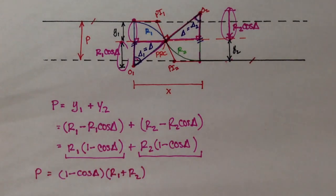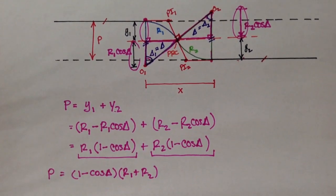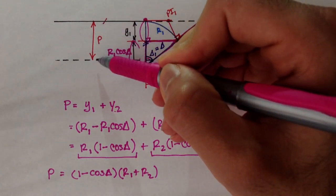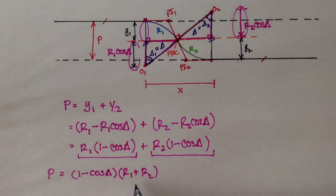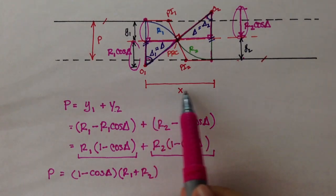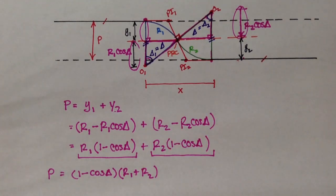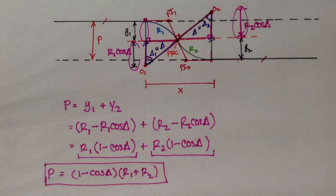So P — the perpendicular distance between road 1 and road 2 — equals (1 − cos δ) times (R1 + R2), the sum of the radii of both curves. I'm going to stop here. In the next video, we'll figure out X, the transition length. See you in the next video.